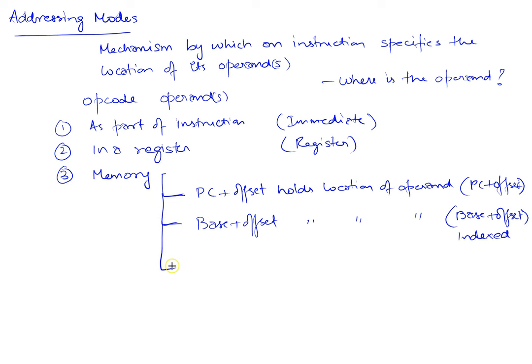And the third way of answering this memory question is the PC plus offset holds the location of the address of the operand. This is called indirect.